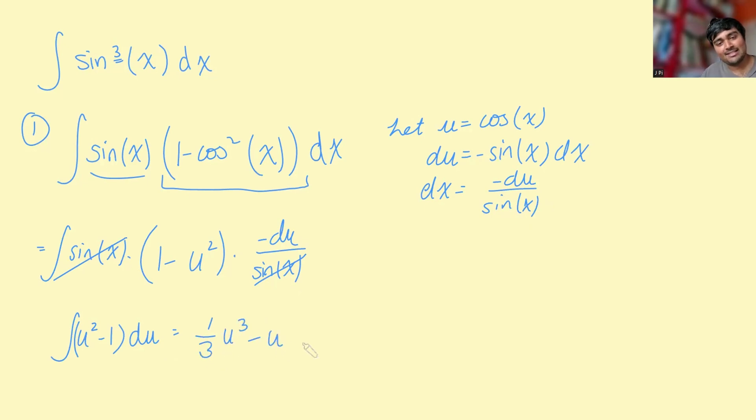This is going to be a third u cubed minus u. And then if we just sub in u is cos x, we get a third cos cubed x minus cos x. And of course, we cannot forget plus c. So that's method one. Let's see method two.